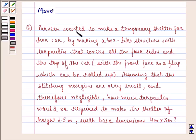The question says: Parveen wanted to make a temporary shelter for her car by making a box-like structure with tarpaulin that covers all four sides and the top of the car, with the front face as a flap which can be rolled up. Assuming that the stitching margins are very small and therefore negligible, how much tarpaulin would be required to make the shelter of height 2.5 meters with base dimensions 4 meters by 3 meters?